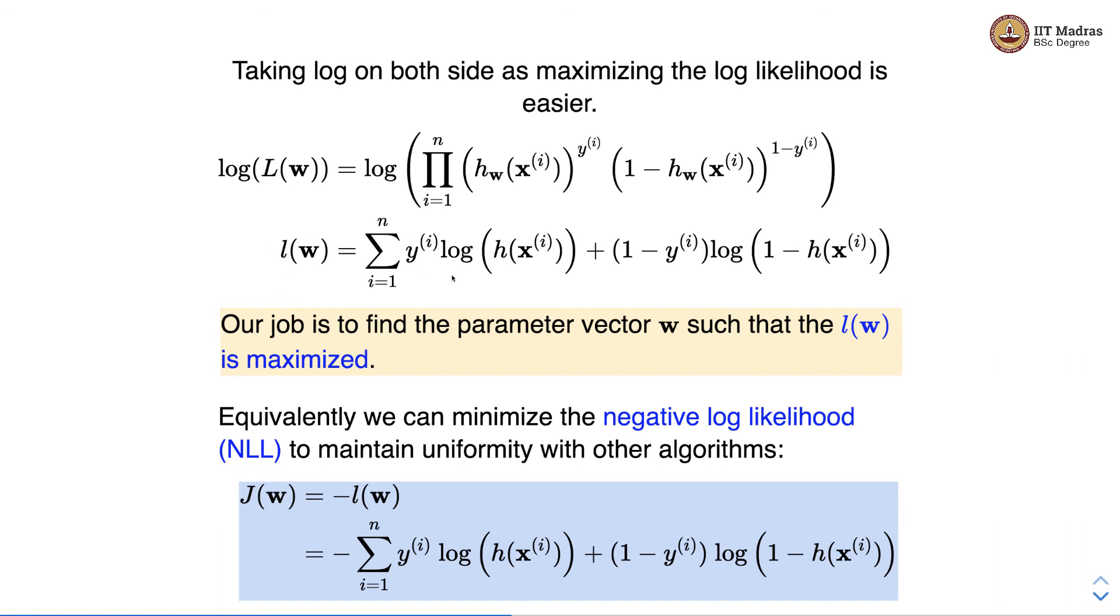When we take the negative of the log likelihood we get minus summation over 1 to n: yi log of h of xi plus 1 minus yi log of 1 minus h of xi, and this particular loss is called binary cross entropy loss.